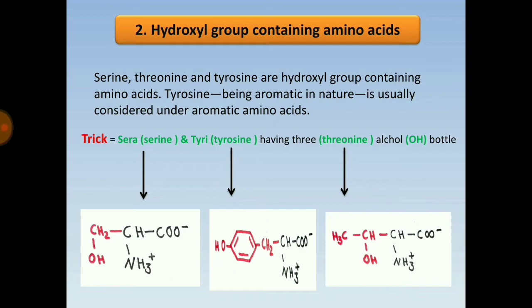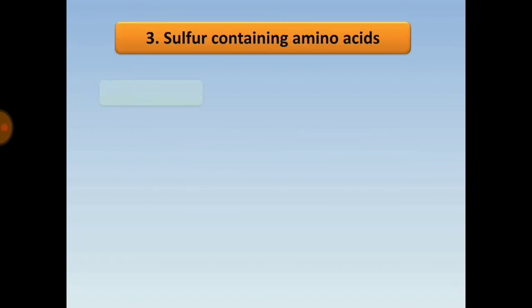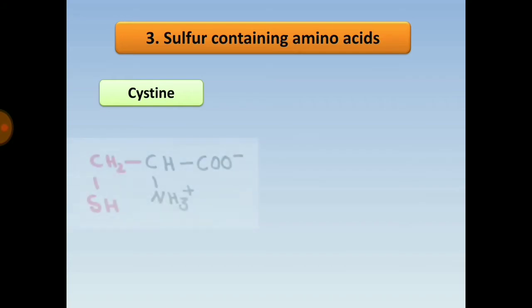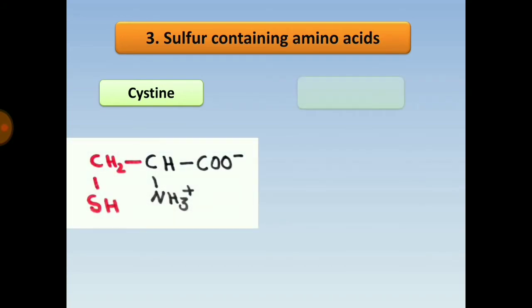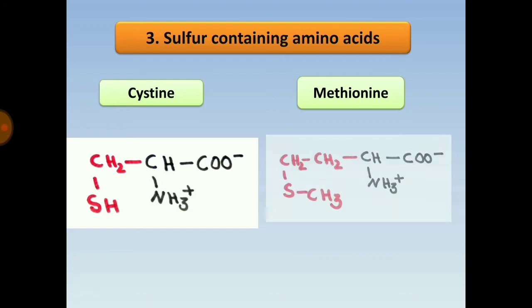Next are the sulfur-containing amino acids: cysteine and methionine. In their structures, sulfur (S) is attached to the general amino acid backbone.